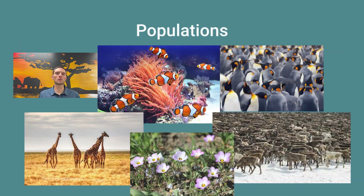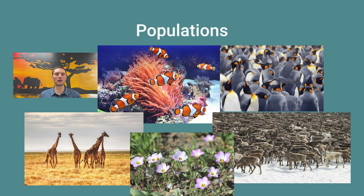To start, we need to focus on what makes up a population. A population is a group of individual organisms of the same species that live in the same area. Populations interact by breeding, competing for food or other resources, or cooperating to avoid predation. Populations can also be separated by geographic barriers, such as water, mountain, etc., so populations in different locations can still have the same species — they're just geographically separated from one another.